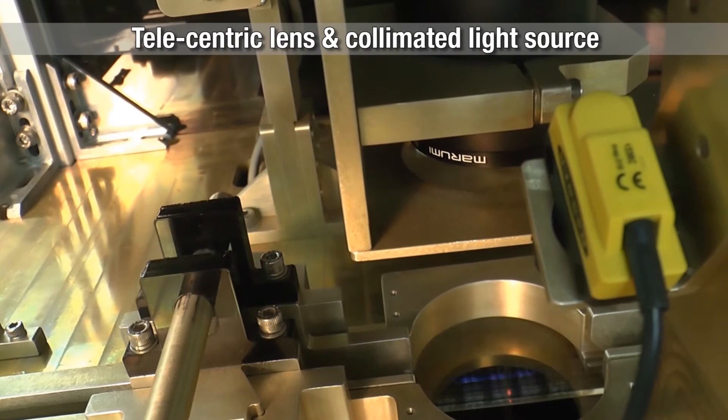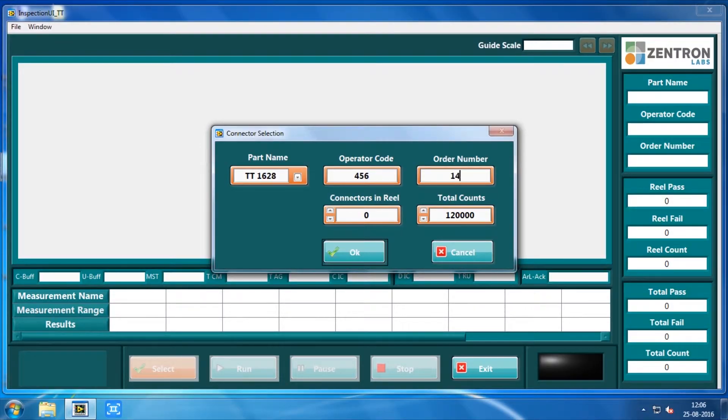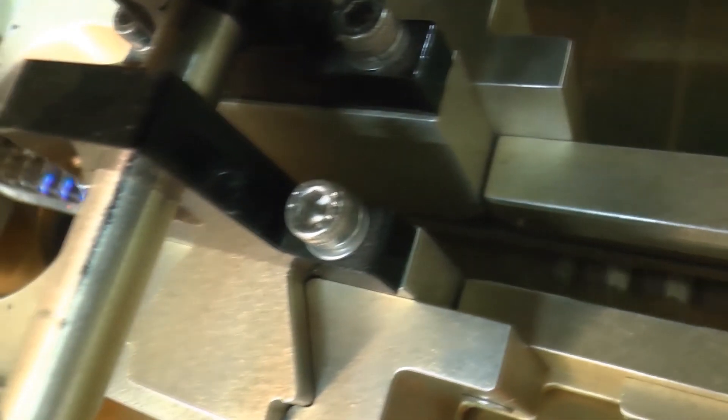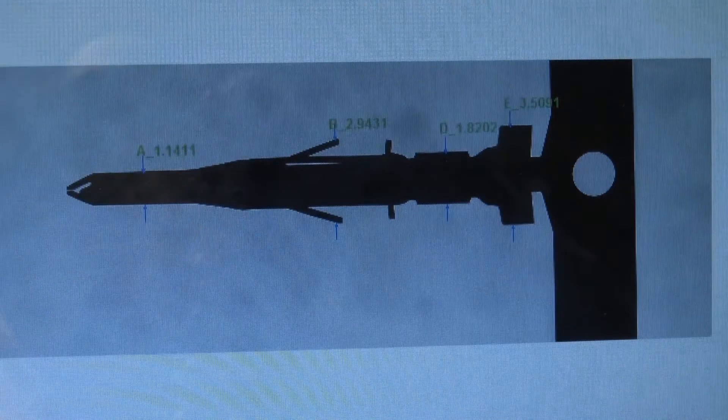Telecentric lens is used to get the infinite depth of view resulting in extremely precise and accurate measurements. A collimated light source is used to emit only parallel light rays. This helps in accurately identifying the silhouette of the edges of the terminal.